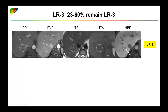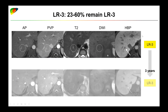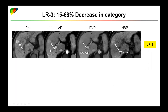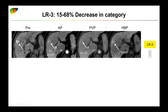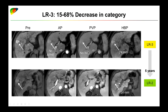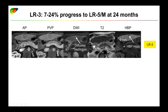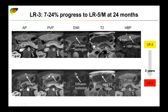Anywhere between 25% to 60% of LR3 observations will remain stable, a wide variety will actually decrease in category, and about up to a quarter will progress to LR5 or LRM at 24 months. Here's an example of such a lesion, which went from a 6 mm LR3 to a 2 cm T2-stage HCC in two years.